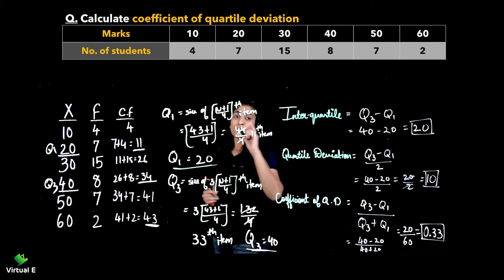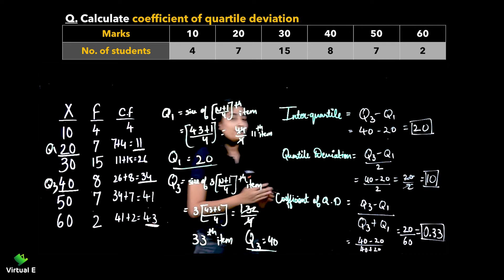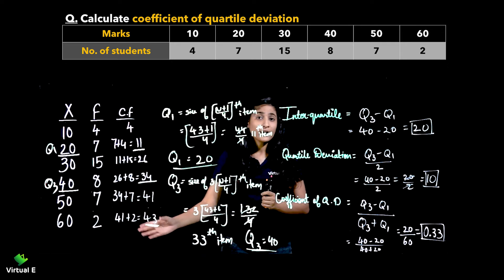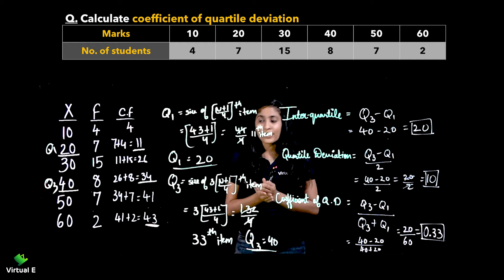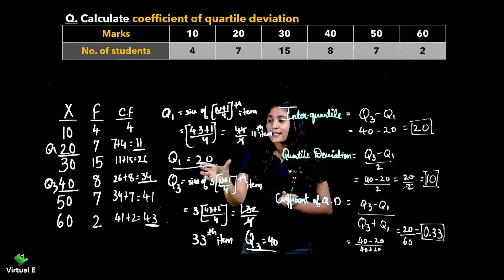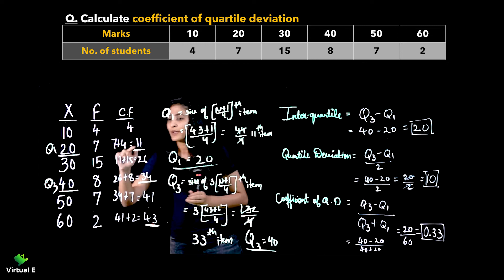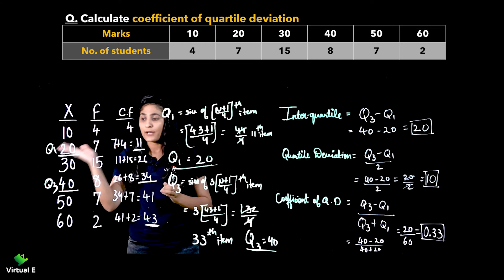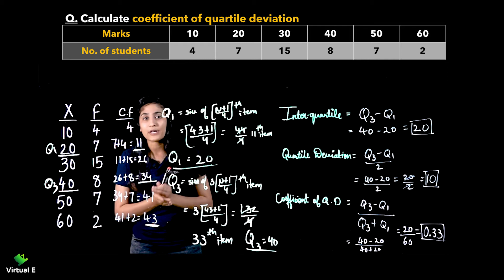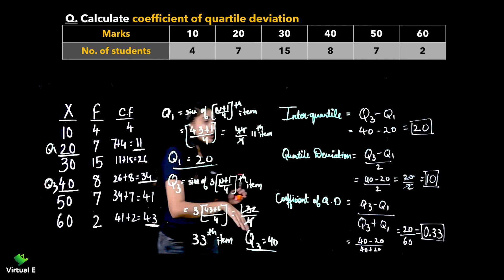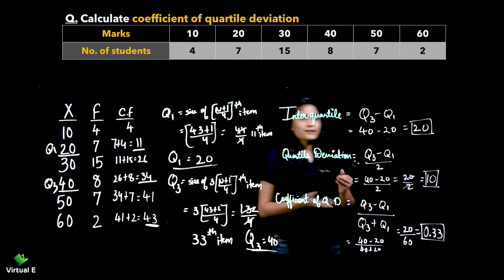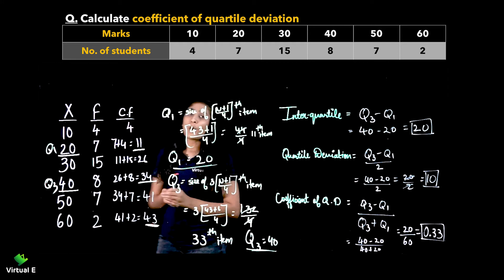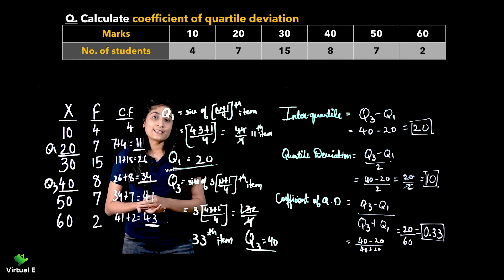So we are done with the first numerical of discrete series. The first step is to find cumulative frequency, then move on to Q1 and Q3. Whatever size you get, check it against the cumulative frequency — the corresponding X value becomes your Q1 or Q3. Then apply the formulas to get your answers.